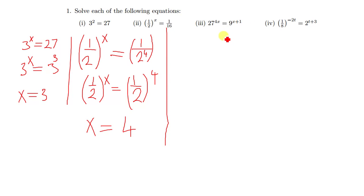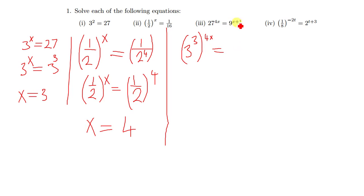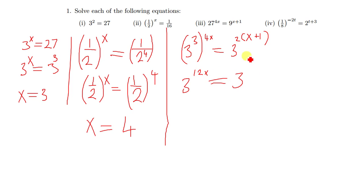For this question, we can make the bases equal by converting both the right and left hand sides to base 3. So 27 to base 3 is just 3 to the power 3, and outside 27 we have 4x. Then 9 to base 3 is 3 raised to power 2, and outside we have x plus 1.